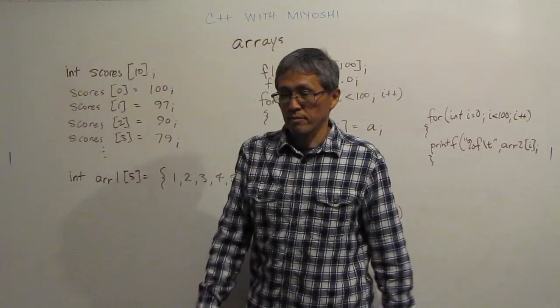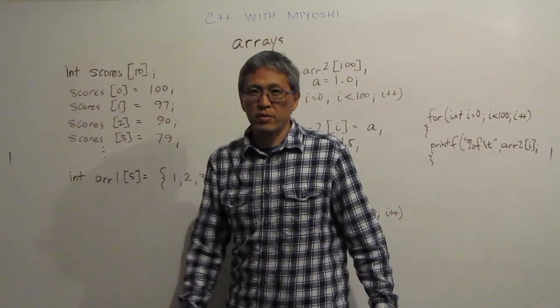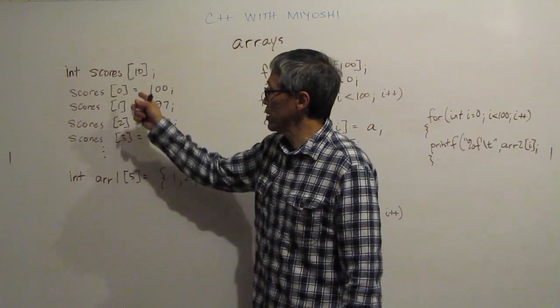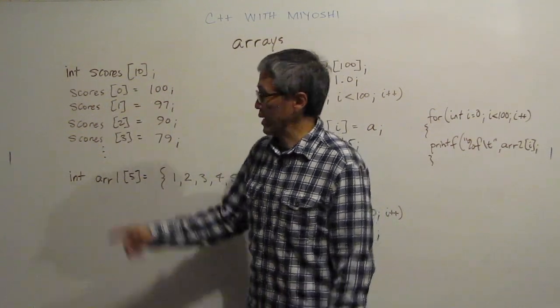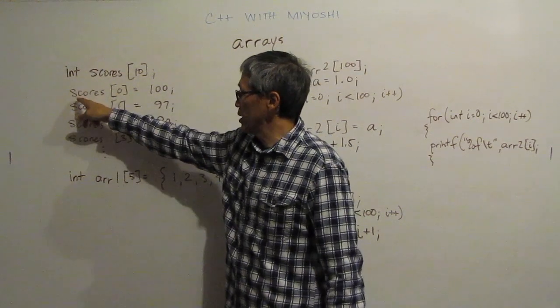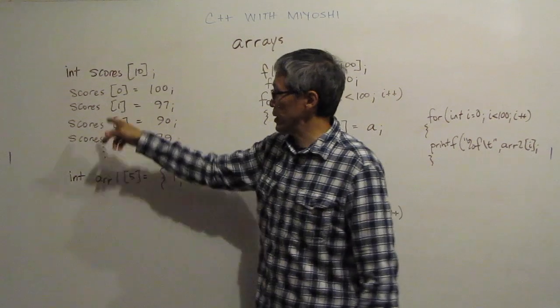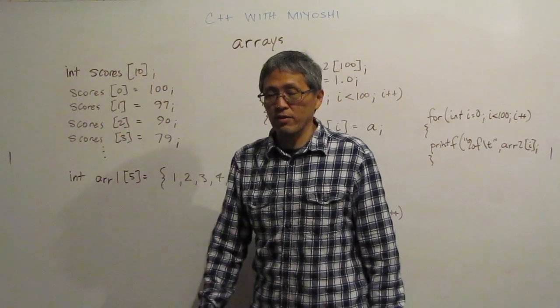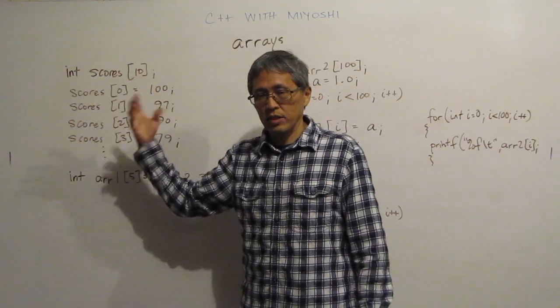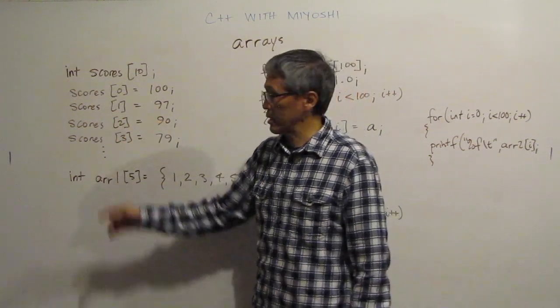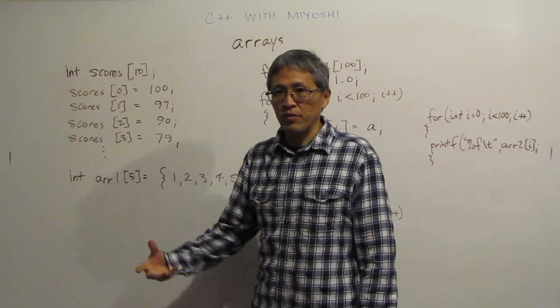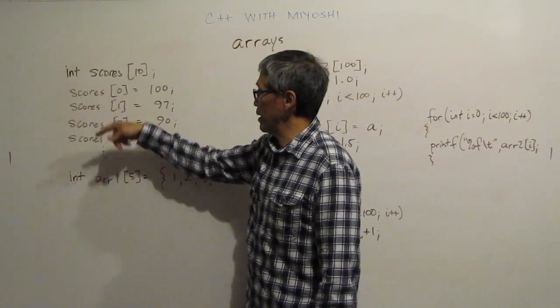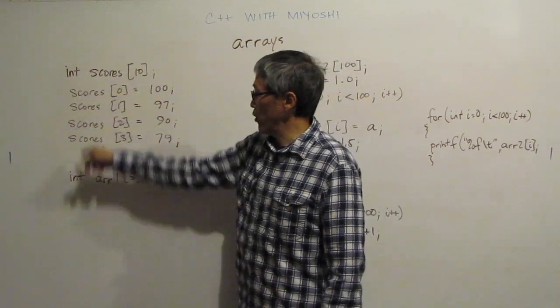Here we have an integer array called scores. Remember, arrays are just a collection of data with the same name. These have different memory spaces and we address each of those by what's called an index. The index is this guy here, I call them subscripts sometimes, so I have scores sub-zero. If you hear me say sub-zero, that means the index of zero. One thing about character arrays or integer arrays or float arrays, they all start with an index of zero. You hear the term zero indexing. That means they start out numbering with zero. Often times computer scientists, computer programmers will start counting with zero, and it makes sense in the way we address our arrays.